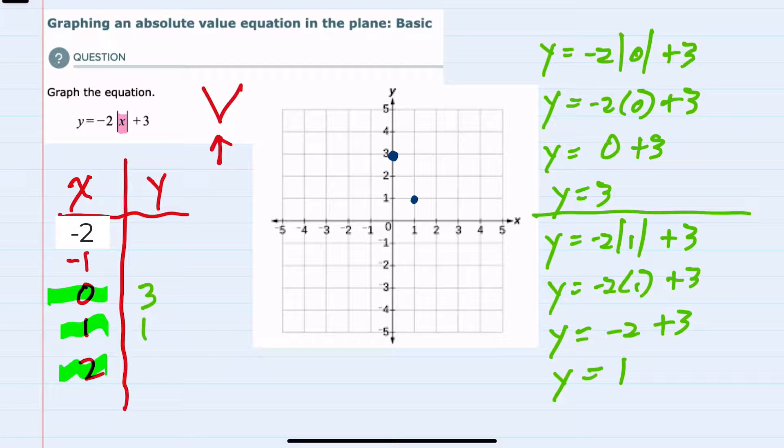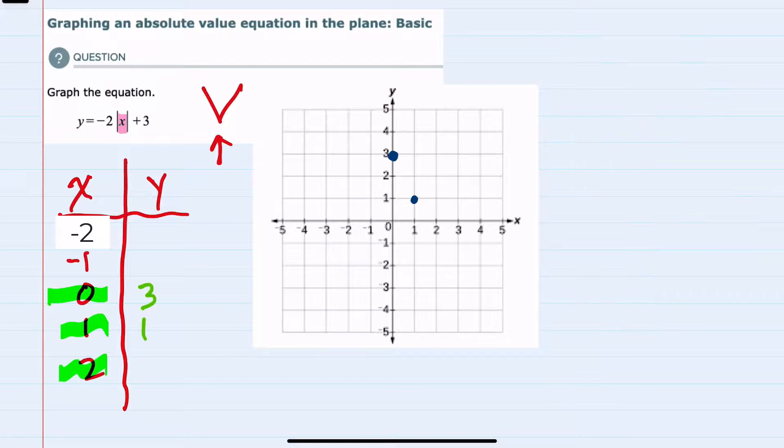I'll continue with the positives by doing 2 next. When I substitute 2 in for x, we get y equals negative 2 times the absolute value of 2 plus 3. The absolute value of 2 is 2, and then multiplying negative 2 times 2 is negative 4. When we add the 3, we have y equals negative 1. So our next coordinate is (2, -1) which is here.